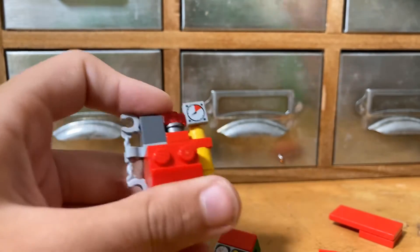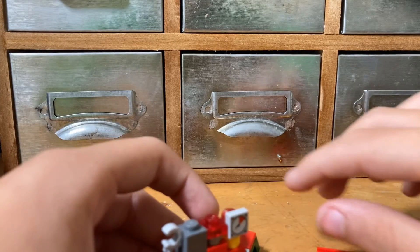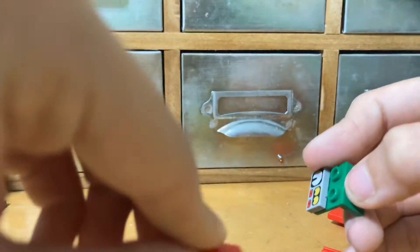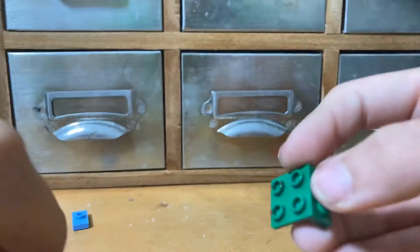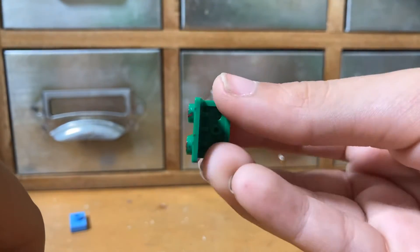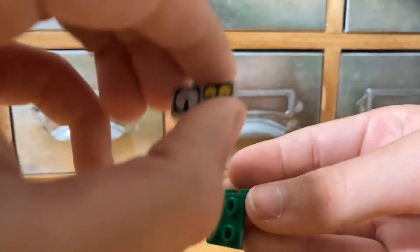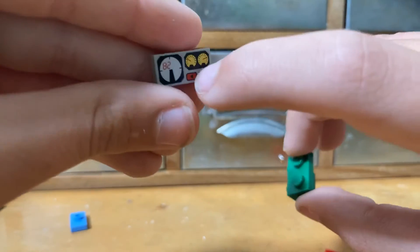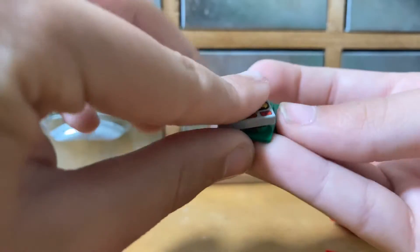Then what you want to do is get one of these pieces, and then you want to get one of these tiles with all the stuff on it and put that on the bottom.